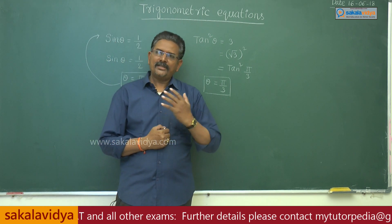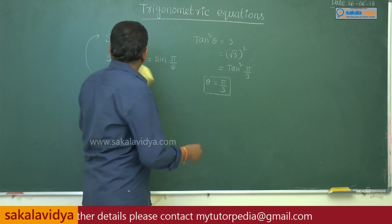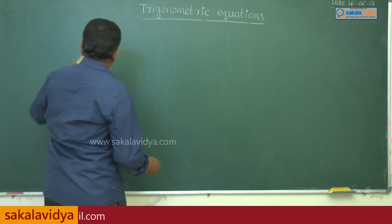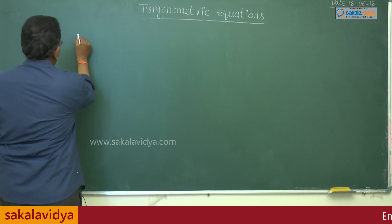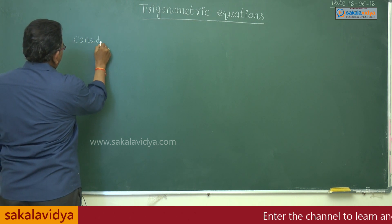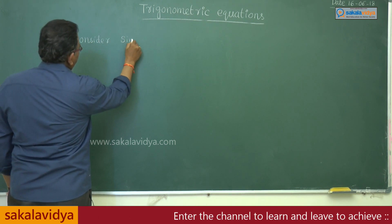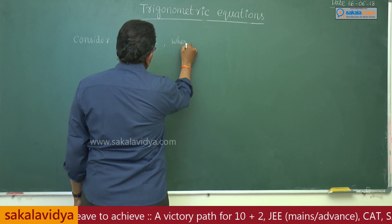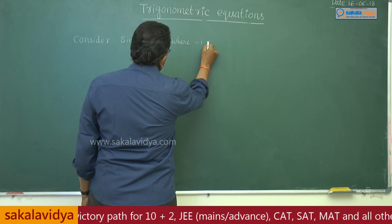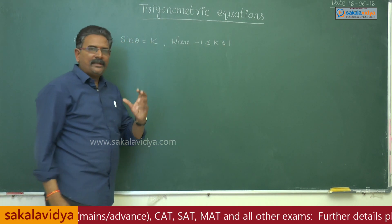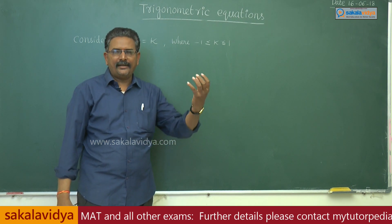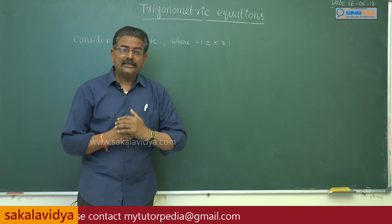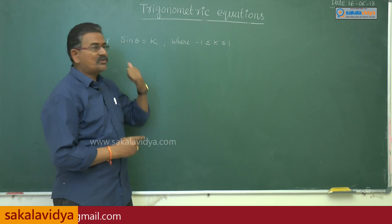First, let us consider sin θ = k, where −1 ≤ k ≤ 1. We know that sin θ always lies between −1 and 1 only. Only then does sin θ = k possess a solution; otherwise, the solution does not exist for this trigonometric equation.